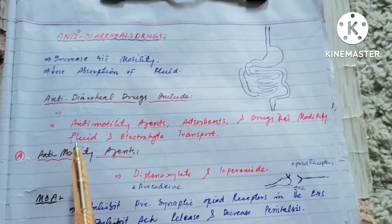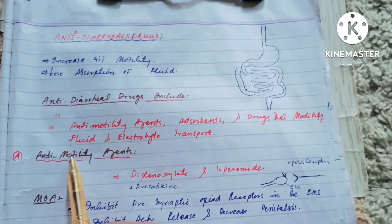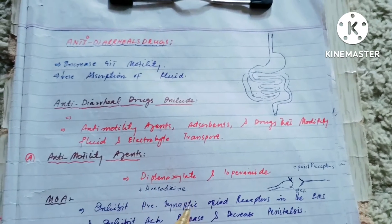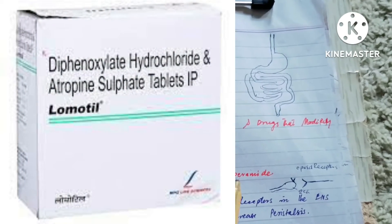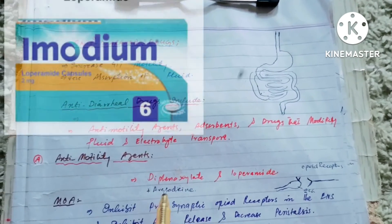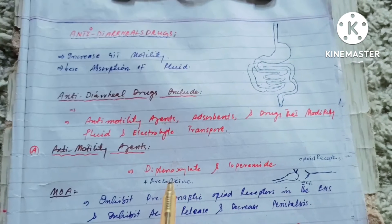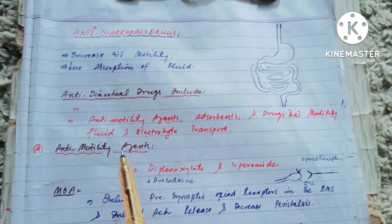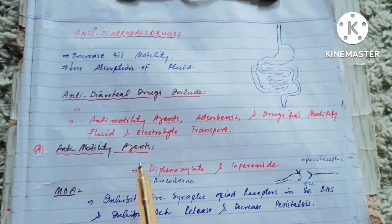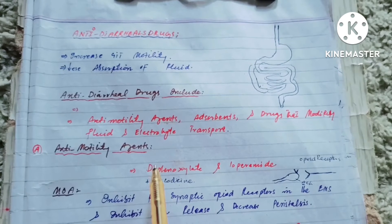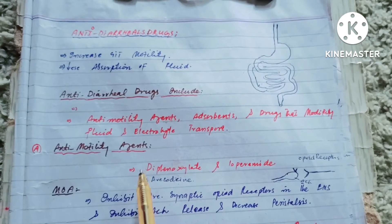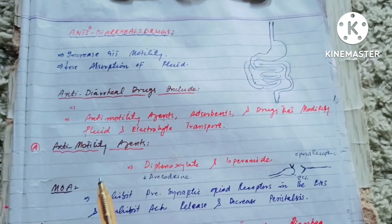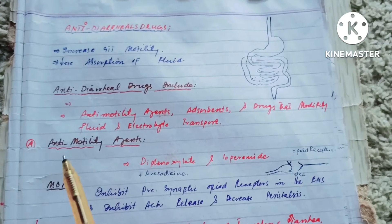The anti-motility agents include anti-muscarinic agents and opioid receptor antagonists. The opioid receptor antagonists include diphenoxylate and loperamide. The anti-muscarinic agents include atropine, scopolamine, etc., but these are rarely used for diarrhea control because muscarinic receptors are present widely in the body, causing other unwanted effects.